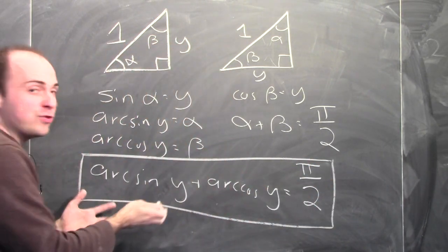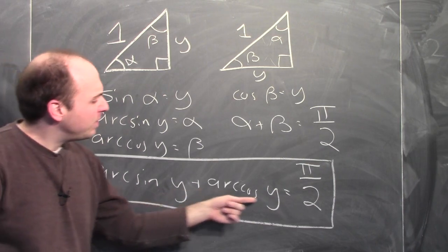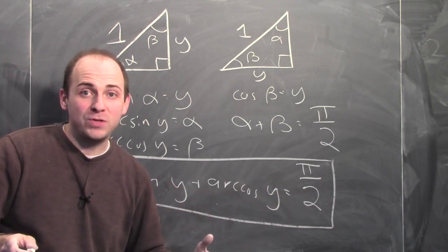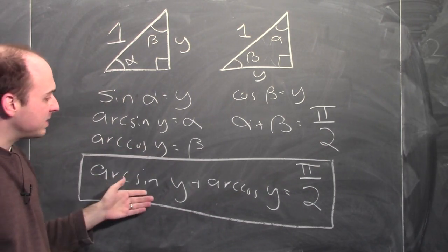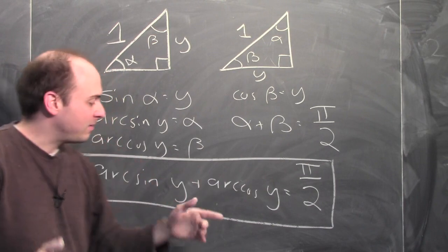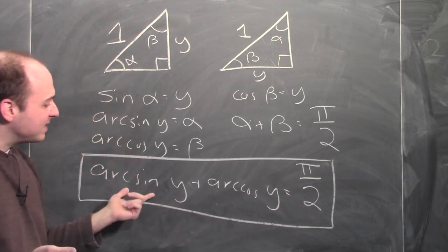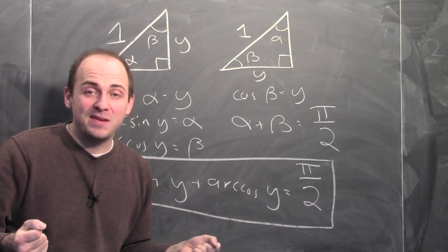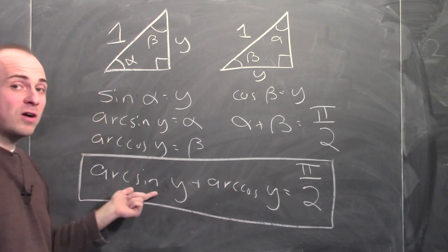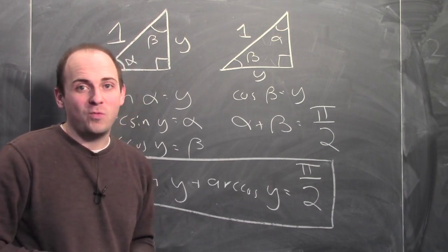This formula is interesting in its own right, but think about what it means differentially. I just calculated the derivative of arcsine. Whatever the derivative of arc cosine is, these two functions add up to a constant — pi over 2. So however wiggling y affects arcsine, it must affect arc cosine in precisely the opposite way. The derivative of arcsine plus the derivative of arc cosine must be 0. That means the derivative of arc cosine is negative 1 over the square root of 1 minus x squared.